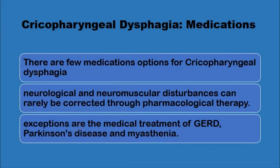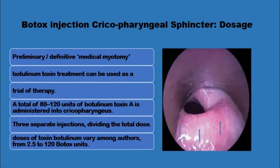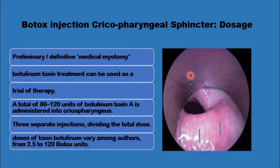When conservative management fails to control symptoms, interventional management is considered, starting with Botox injection into the cricopharyngeal muscle itself. This induces paralysis of the muscle, causing a medical myotomy. This is temporary, lasting around six months. If successful, it can be repeated several times. More importantly, success with Botox predicts that the patient will benefit from a definitive surgical or endoscopic myotomy.